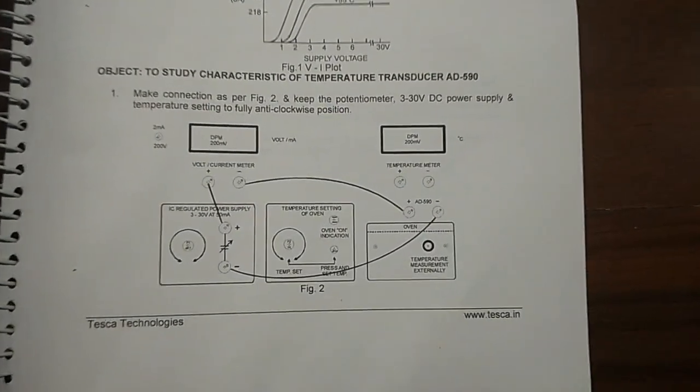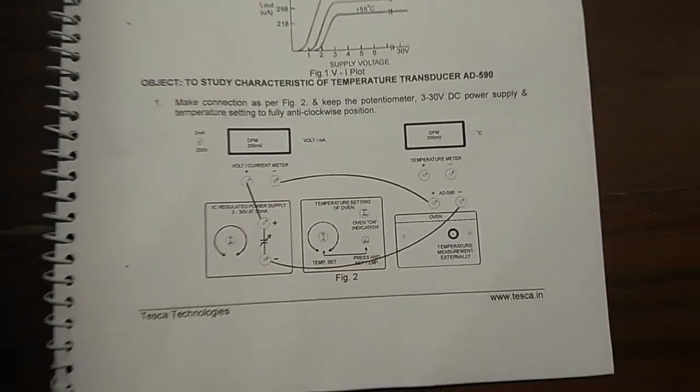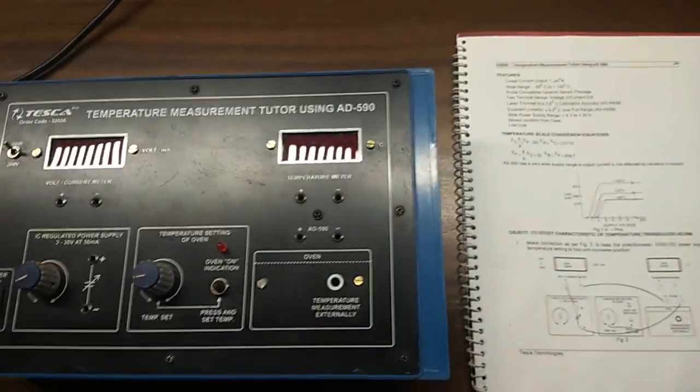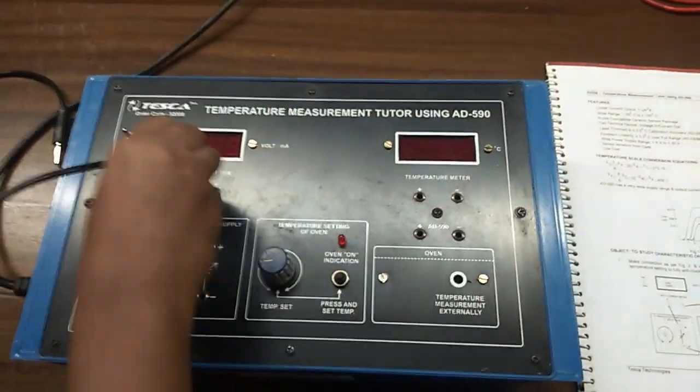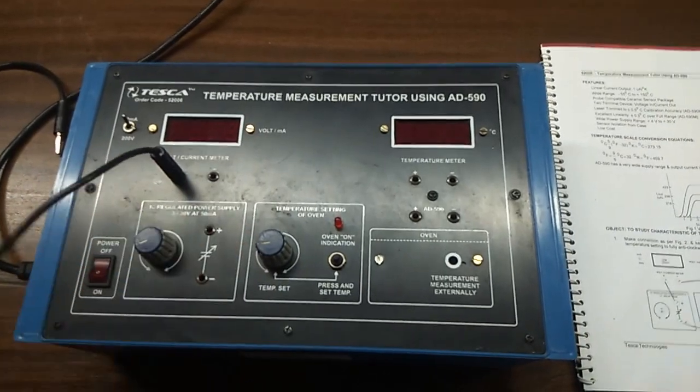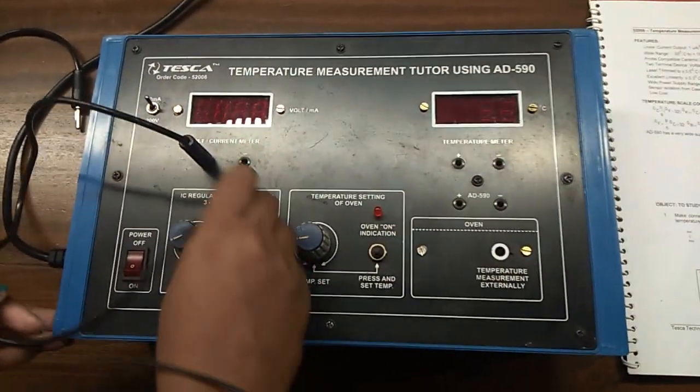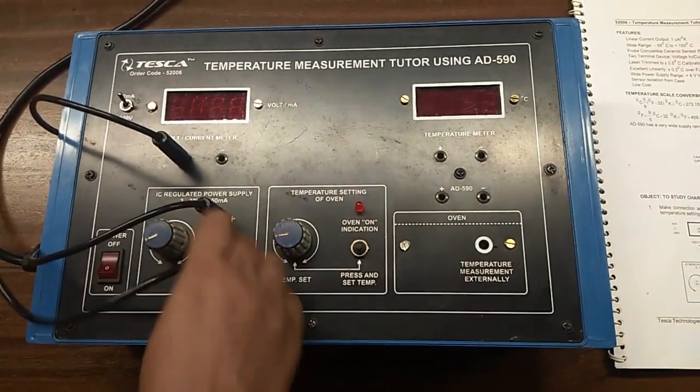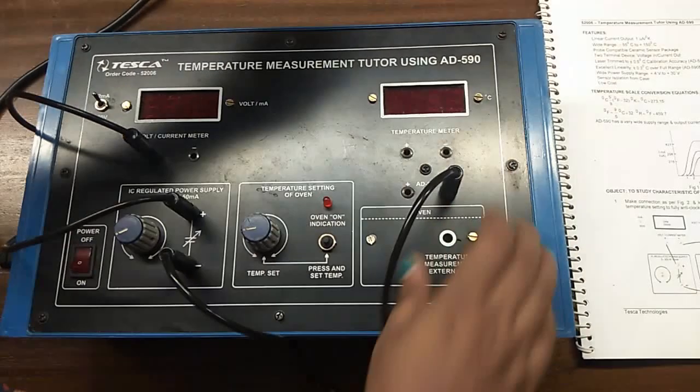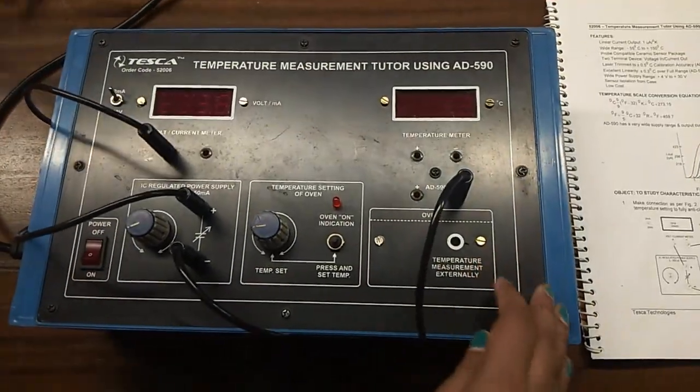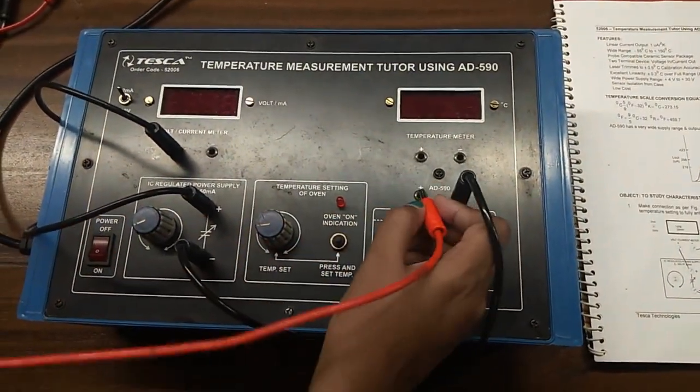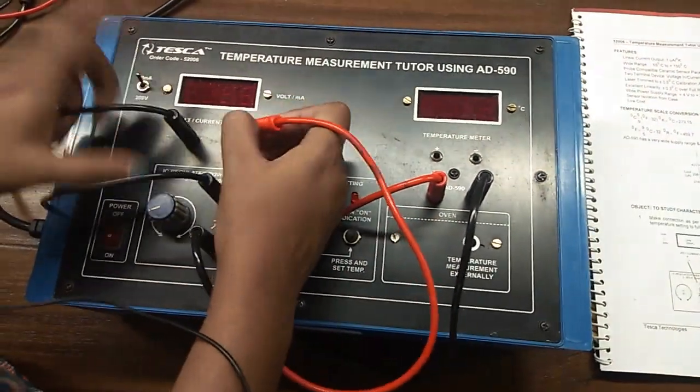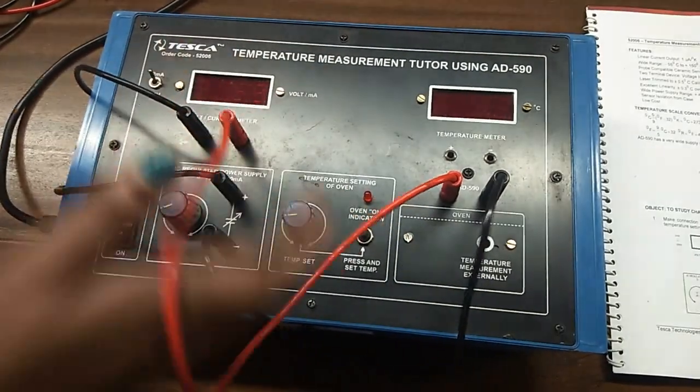This is the connection that we are going to build to perform this experiment. First, I am going to connect the positive terminal of the volt current meter to the positive terminal of the power supply. The negative terminal of the power supply will be connected with the negative terminal of AD-590. Now connect the positive terminal of AD-590 with the negative terminal of the volt current meter.